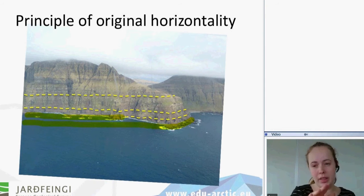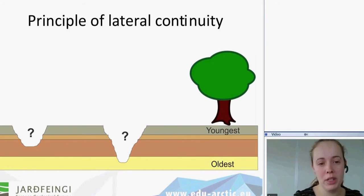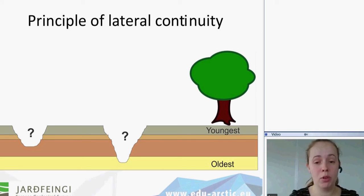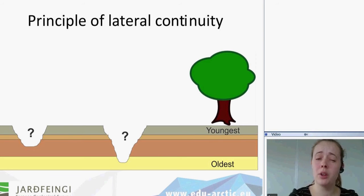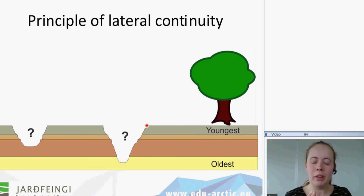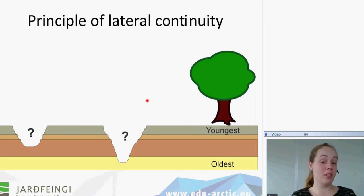Now we go to the third principle Steno came up with: the principle of lateral continuity. We have the oldest in the base and the youngest in the top. But now we have some areas where there are no sediments or rocks. The question is: did there always used to be no rocks here? If you have a suggestion, you're welcome to answer.